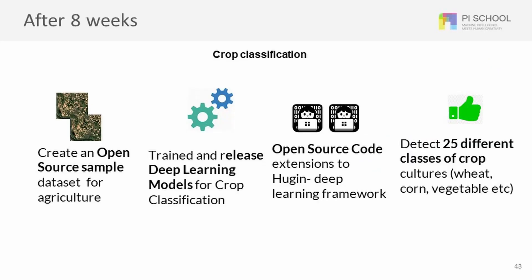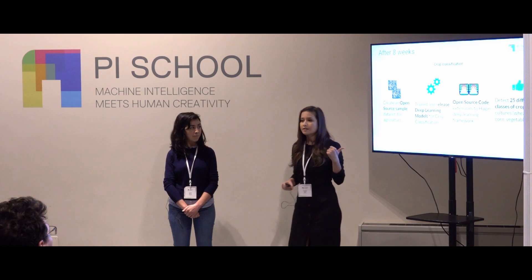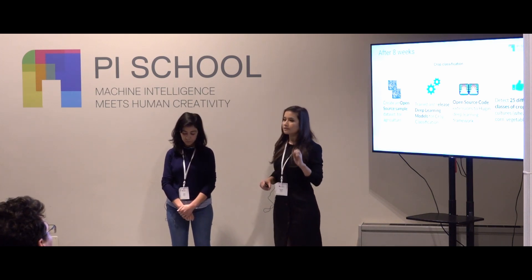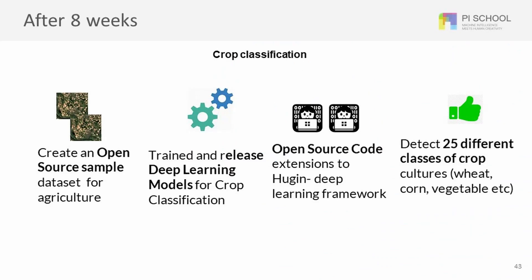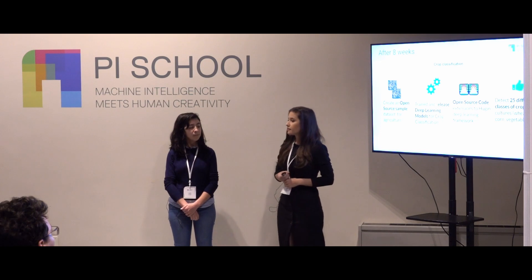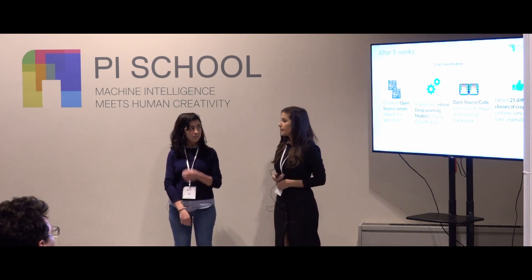In the past eight weeks we have focused on the problem of crop classification. Currently the remote sensing community is facing the lack of an open source large-scale dataset and the lack of open source deep learning pre-trained models. In the past two months we have built a sample of an open source dataset, we have trained and released a deep learning model, and we have open-sourced our code as an extension to the deep learning framework called Hugging Face. We are currently able to detect 25 different types of crops, achieving 84% pixel similarity.